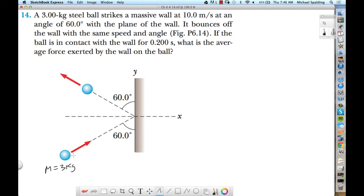They give us the angle from the vertical, so it hits at a 60 degree angle measured from the wall, and then bounces off at a 60 degree angle. This initial velocity - so it strikes a massive wall at 10 meter per second.